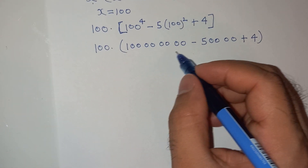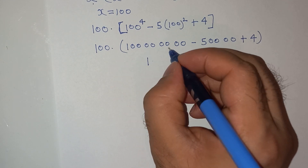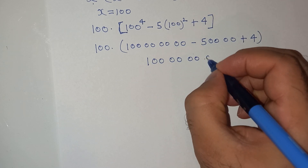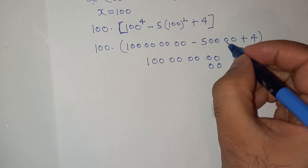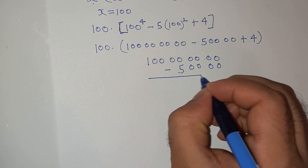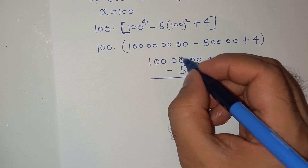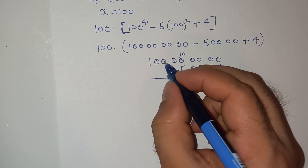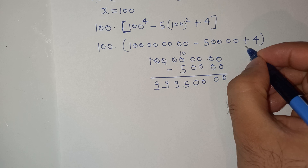Let's solve the bracket first: 100,000,000 minus 500,000 equals 99,500,000. Then adding 4 gives 99,500,004.